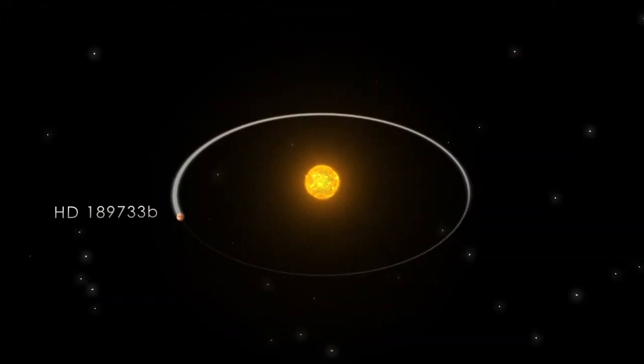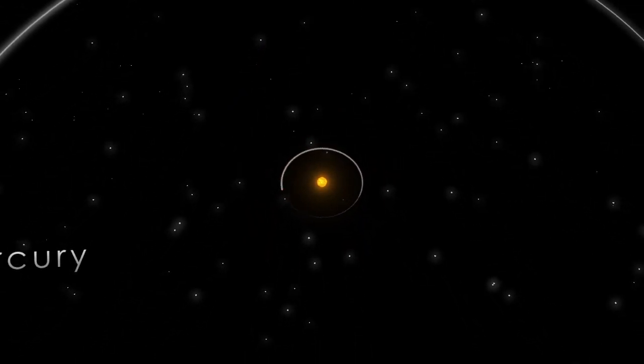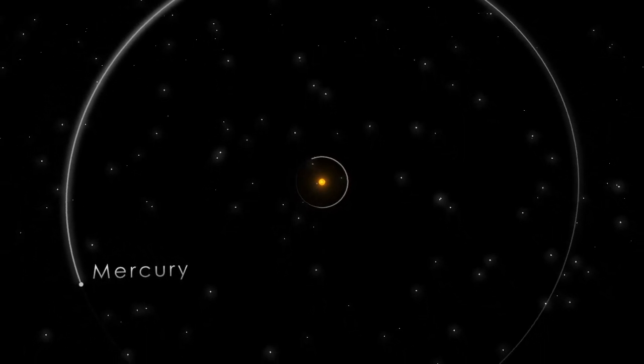Incredibly, the planet orbits just 3 million miles from the star, 12 times closer than Mercury orbits our Sun. It's so close that the planet whips around its star in a little over two days.